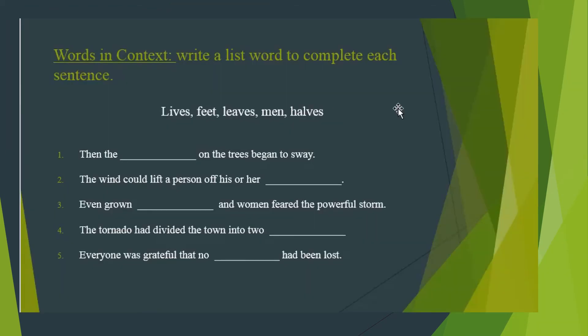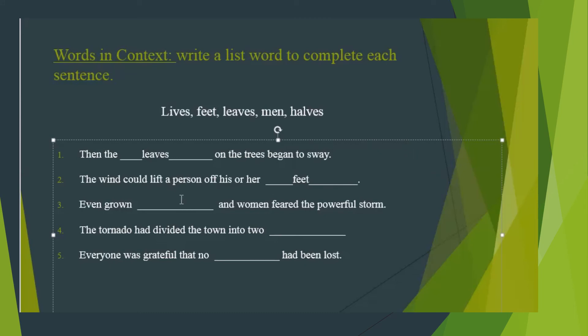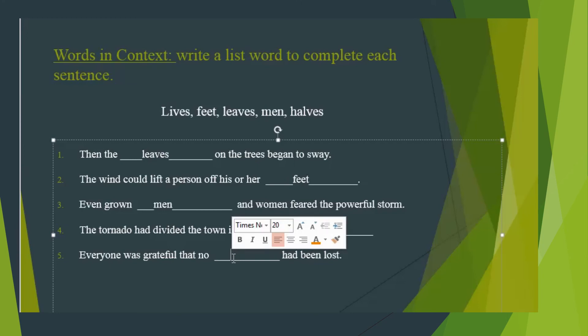Words in context, number 6: Write a list word to complete each sentence. The words are: lives, feet, leaves, men, halves. Number 1: The leaves on the trees began to sway. Number 2: The wind could lift a person off his or her feet. Number 3: Even grown men and women feared the powerful storm. Number 4: That tornado had divided the town into two halves. And number 5: Everyone was grateful that no lives had been lost.